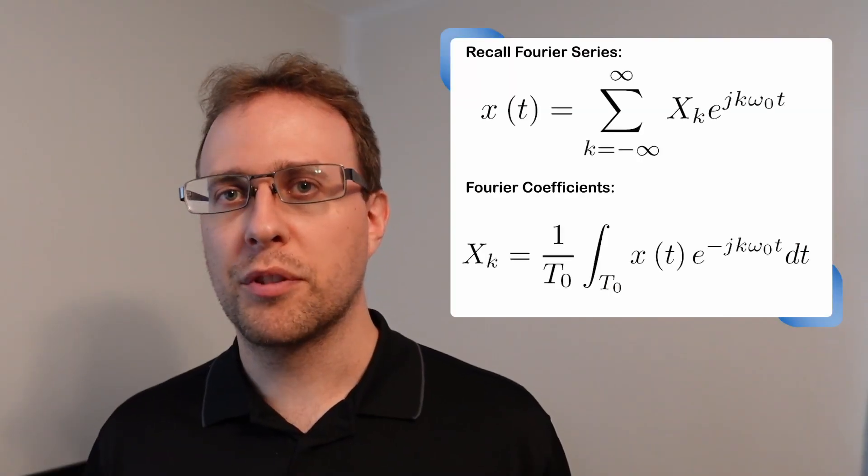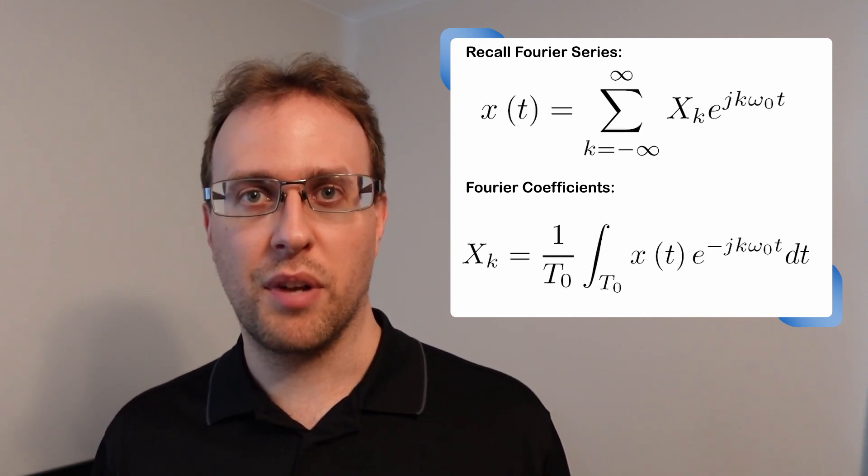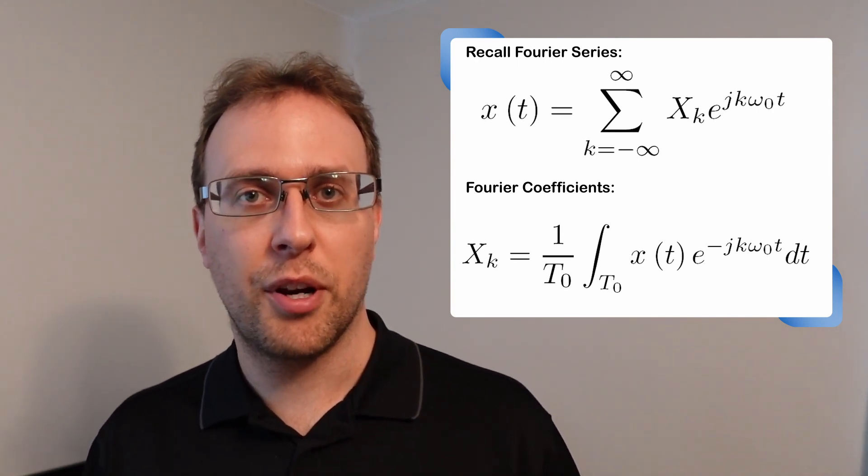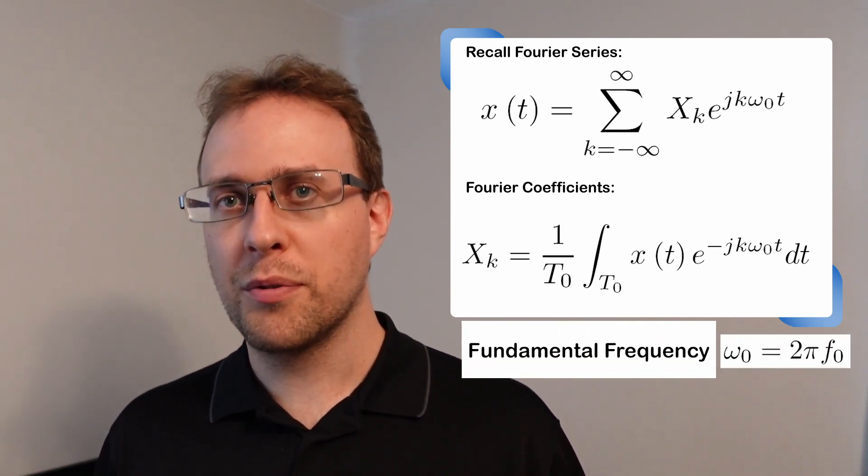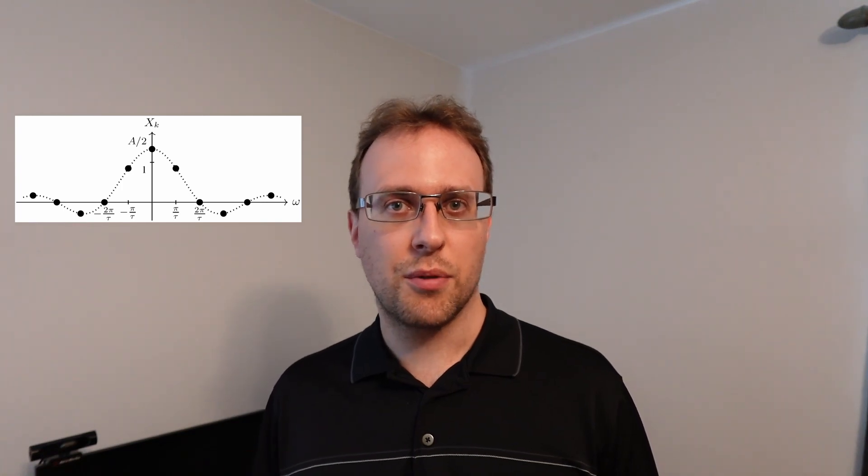So with the Fourier series we're able to write signals as a sum of sinusoids or a sum of complex exponentials. The sum could be infinite, as is the case for the periodic square wave, but all the frequency components are multiples of what's known as the fundamental frequency. So in the frequency domain, instead of continuous spectrum, we get discrete spectra associated with each of the frequency components of the signal.